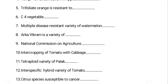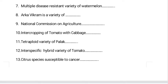Pusa Jyoti is a tetraploid variety of palak, developed through colchicine treatment. Pusa Red Plum and Hisar Anmol are interspecific hybrid varieties of tomato. Regarding citrus species susceptible to canker: acid lime is highly susceptible to citrus canker, and sweet orange is highly susceptible to citrus greening.